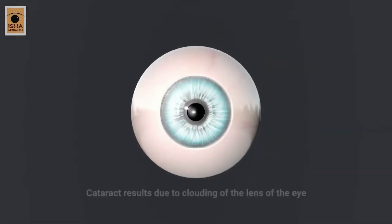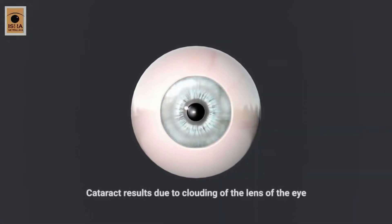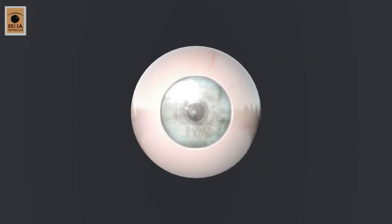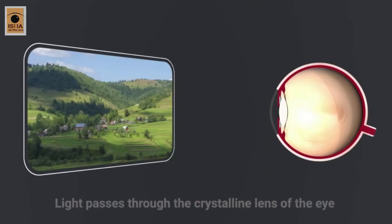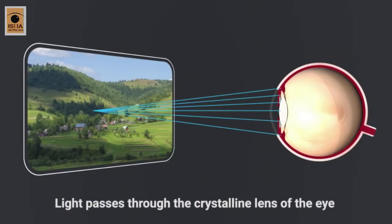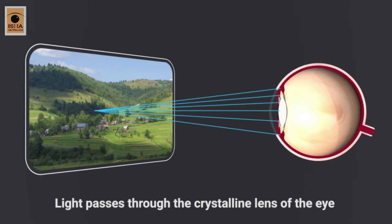Cataract is a condition in which clouding of the lens of the eye occurs, resulting in poor vision. In normal eyes, light from an image passes through a clear part of the eye called the crystalline lens.